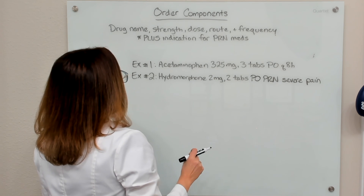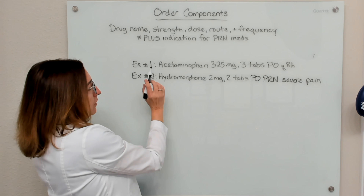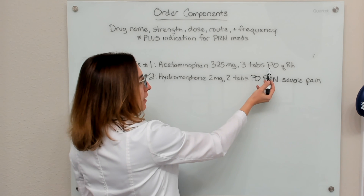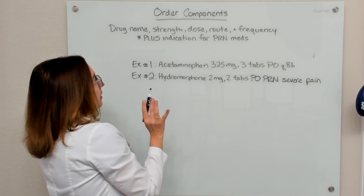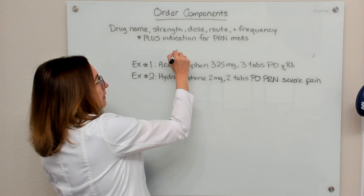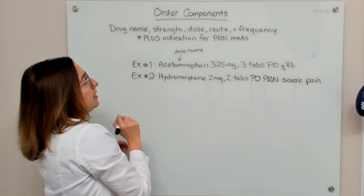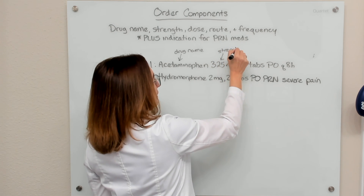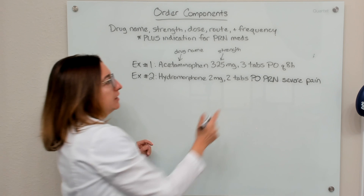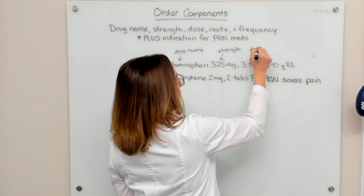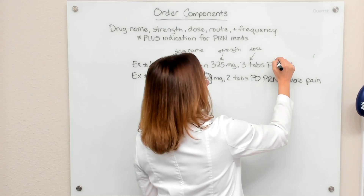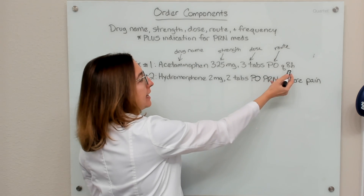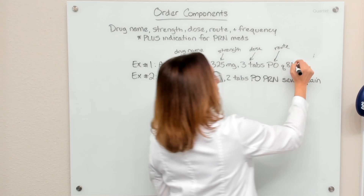Let's take a look at a couple of examples. In our first example, we have an order for acetaminophen, 325 milligrams, three tabs PO Q8H. The drug name is acetaminophen. The strength is 325 milligrams. The dose that needs to be administered is three tabs. The route is PO — orally. And the frequency is Q8H, meaning every eight hours.